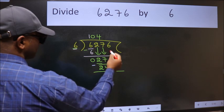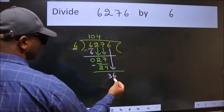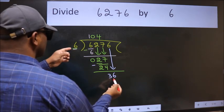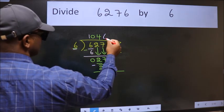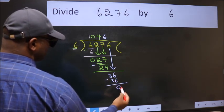After this bring down the beside number. So 6 down. 36. When do we get 36 in 6 table? 6 sixes 36. Now we subtract. We get 0.